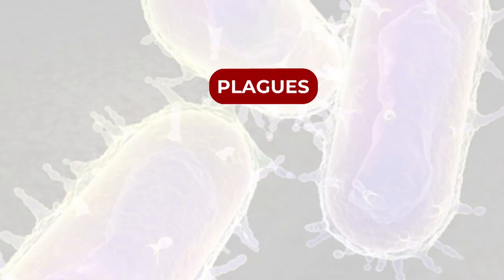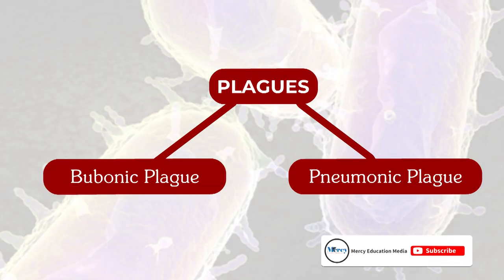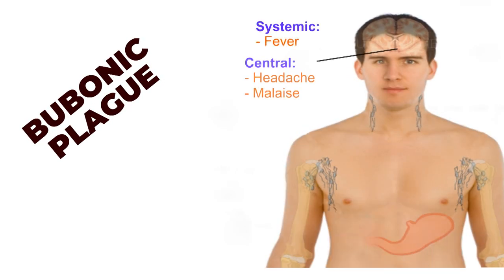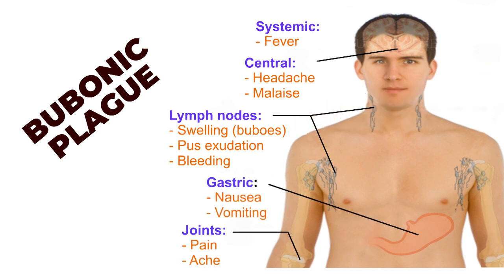The two types of plague are bubonic plague and pneumonic plague. Bubonic plague is characterized by enlarged and inflamed limb glands, i.e., buboes. In untreated cases, bubonic plague can cause 58% mortality.